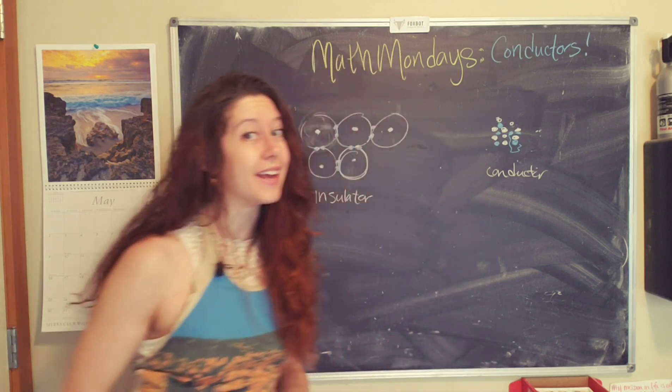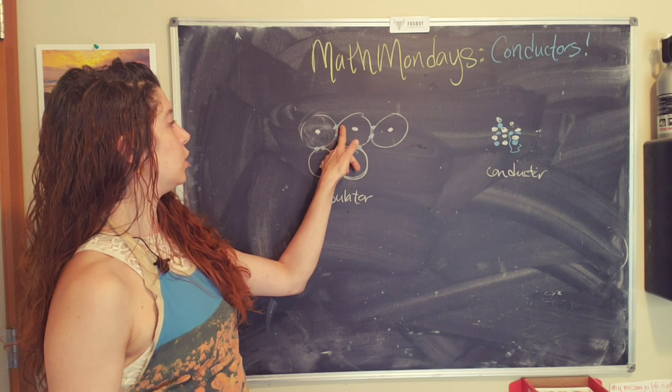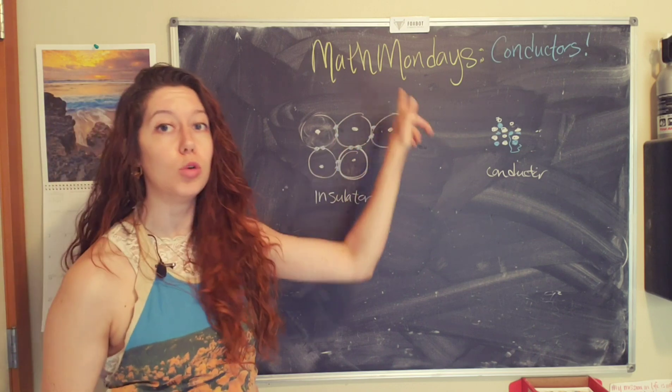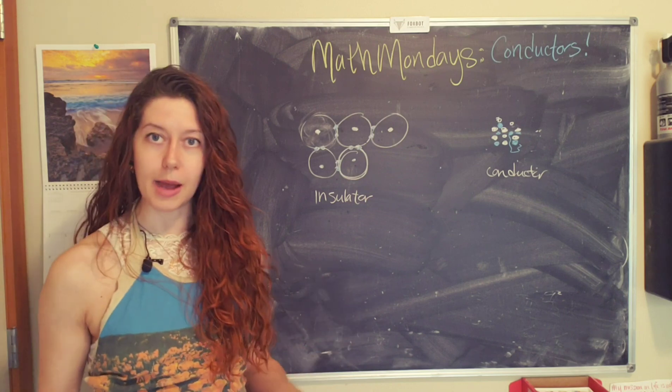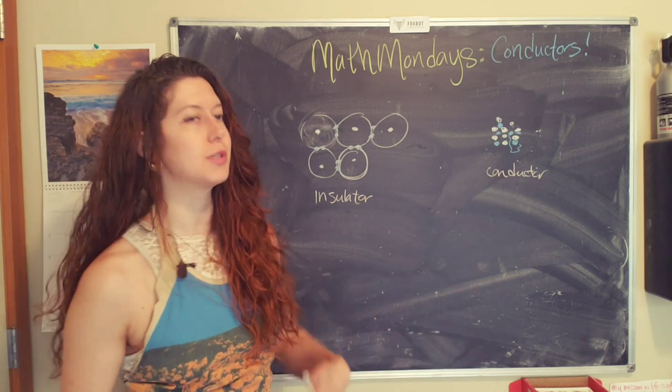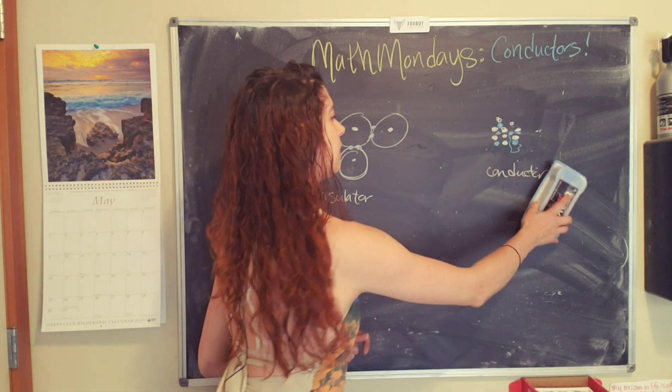That said, if you get enough electrical energy, you can actually remove these electrons and then you get charged blowing through insulators. It's just a matter of how much energy does it take. For conductors, you don't need a lot of electrical energy to get these charges to move.